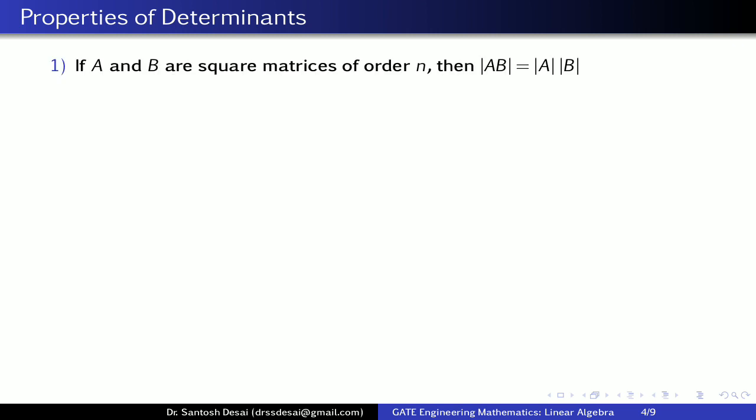Now we will see some properties of determinants. By using these properties, one can also find the value of the determinant. First: if A and B are square matrices of order n, then det(AB) = det(A)·det(B). Second: det(A^M) = (det(A))^M, where M runs from 2, 3, 4. If you have the value of det(A), then by this second property, one can find the value of det(A^M).